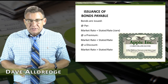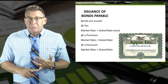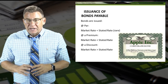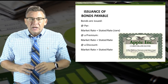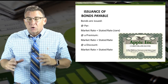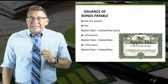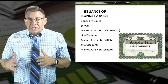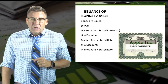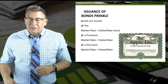Bonds are issued at their market price, which could mean their par or face value. It could also mean at a premium, if the market interest rate is less than the stated interest rate — issuing bonds at a premium means selling them for more than their face value. Finally, it could mean at a discount, if the market interest rate is greater than the stated interest rate of the bond — issuing bonds at a discount means selling them for less than their face value.